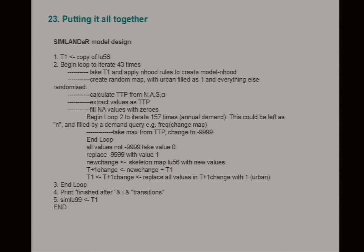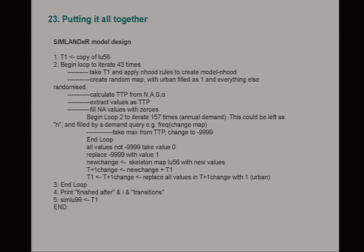This is my pseudo code — I repeat, I'm not a programmer. One thing you'll see is I've got a loop within a loop, which hasn't caused too many problems, but there are definitely better ways to do this. We're running the neighbourhood rules, creating our random map, then calculating our total transition potential by multiplying these things together, extracting the values, and entering a second loop to locate — for each time step — 157 cells of urban land. We take the maximum using the max command and change it to minus 999, so the second time we go into the loop we're not picking the same maximum.